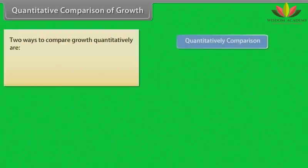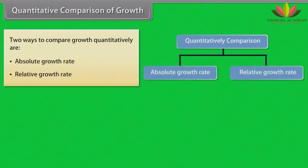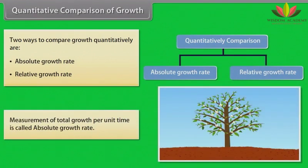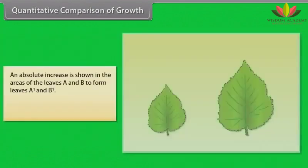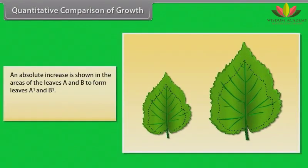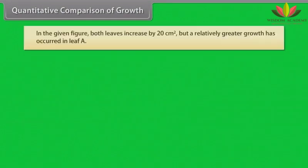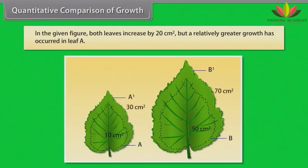Two ways to compare growth quantitatively are absolute growth rate and relative growth rate. Measurement of total growth per unit time is called absolute growth rate. An absolute increase is shown in the areas of leaves A and B to form leaves A1 and B1. Growth of a given system per unit time is called relative growth rate. In the given figure, both leaves increase by 20 cm² but a relatively greater growth has occurred in leaf A.